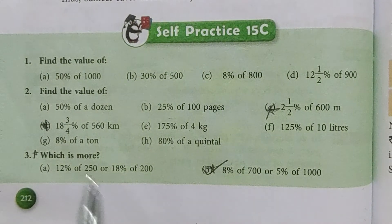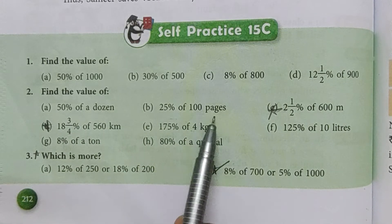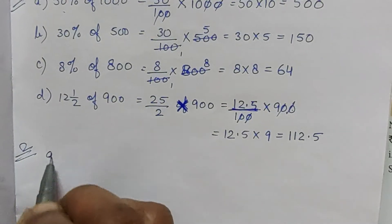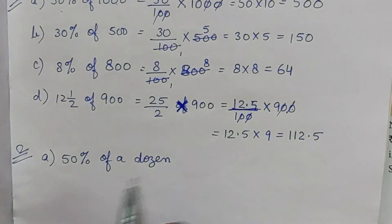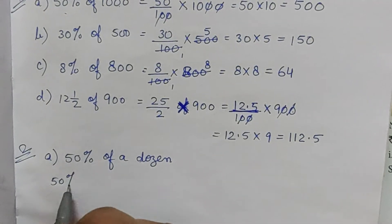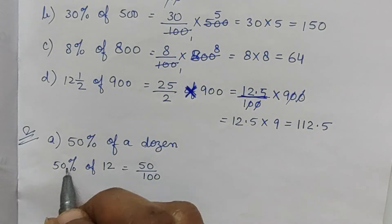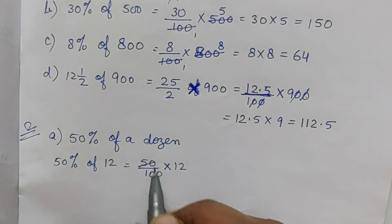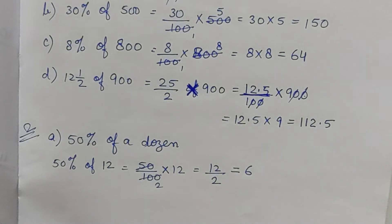Now question number two: Find the value of the following. Here we have different things - 50% of a dozen, 25% of 100 pages, etc. Part a: 50% of a dozen. Dozen means 12, so 50% of 12. That's 50 by 100 into 12. Reducing, that equals 12 by 2, which is 6.